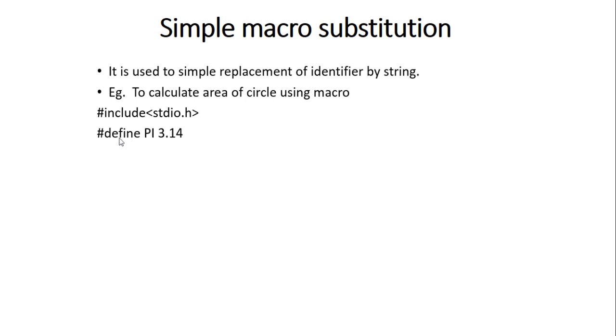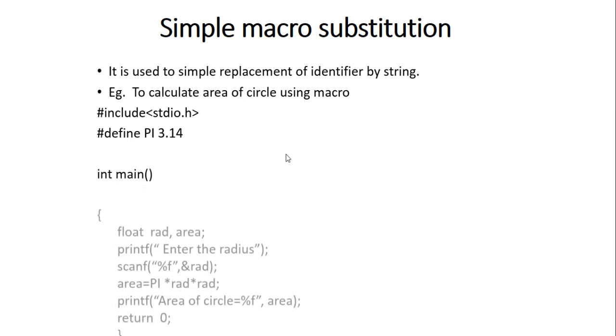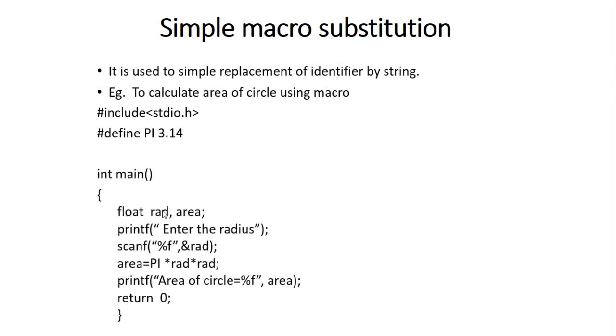Here we are defining the macro PI for PI. PI value is a constant, so here we are defining the PI value as 3.14. Then int main, and here float radius for circle and area. printf "Enter the radius".